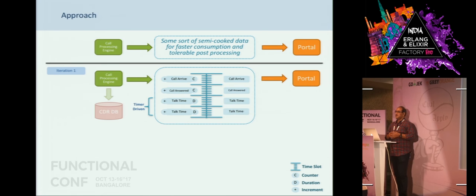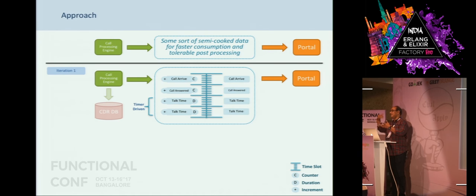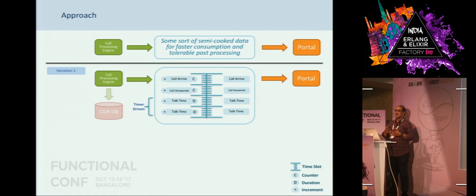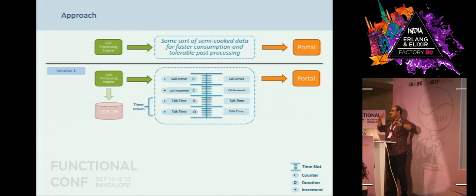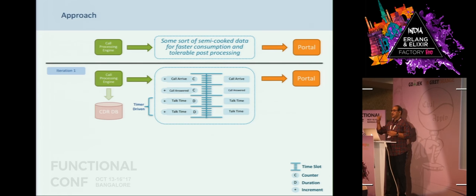Anybody who has experience writing massive Erlang code or very high performance systems understands that you cannot have so many timers running. Think about 100 or 500 calls simultaneously going on, and for each call we need to have a timer running other than the call timers — that's a massive performance hit. There is a timer module which does that but the efficiency guide highly discourages using it. There are other tricks using Erlang send_after, but running the timers wasn't very efficient. We had a design philosophy that we shouldn't run timers and we had a problem too — when the end call event doesn't come, the timers just keep on updating the slot. It's also not a good idea.